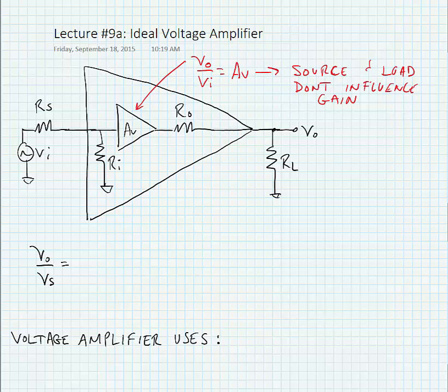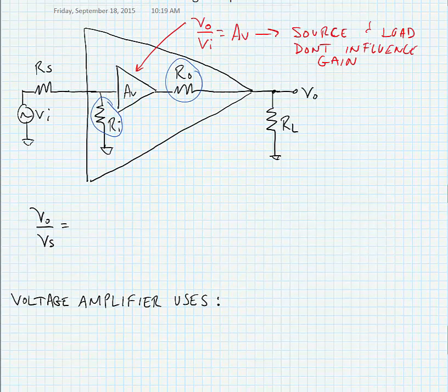Of course, a real amplifier has finite output and input impedances, and we have to account for those finite input and output impedances in our gain calculation.